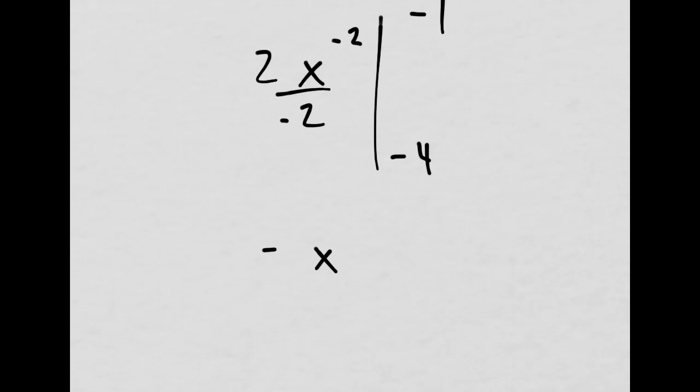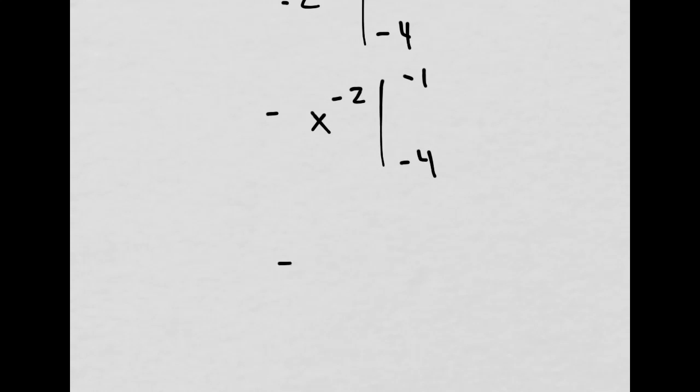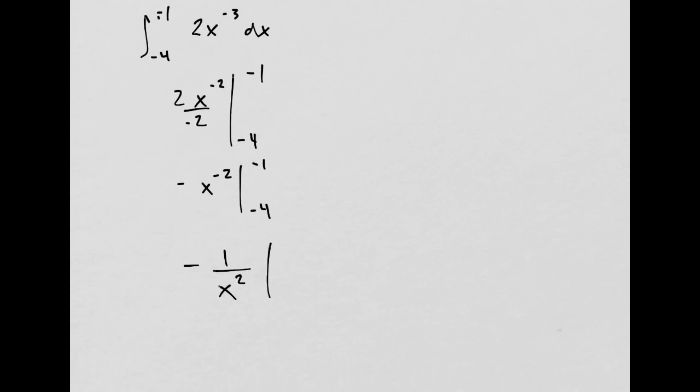This would be just negative x to the negative 2 from negative 4 to negative 1, which is just negative 1 over x squared. Are we okay so far?